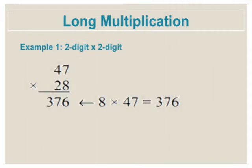Units: 8 times 7 equals 56. Write the 6 down and carry the 5 tenths over. 8 times 4 equals 32 plus 5 that equals 37. Write the 7 in the tens column and the 3 in the hundreds column.